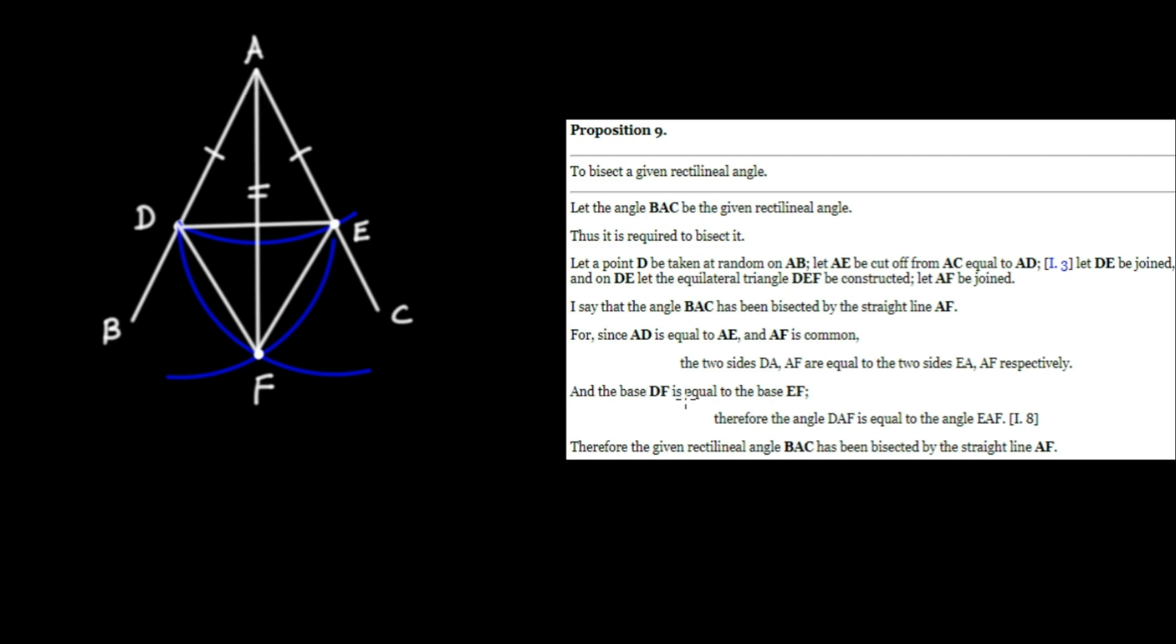And the base DF is equal to the base EF. Let's review that as well. So DF is equal to EF. Why is that true? Remember, this triangle is equilateral. So I'll use the triple dash here.